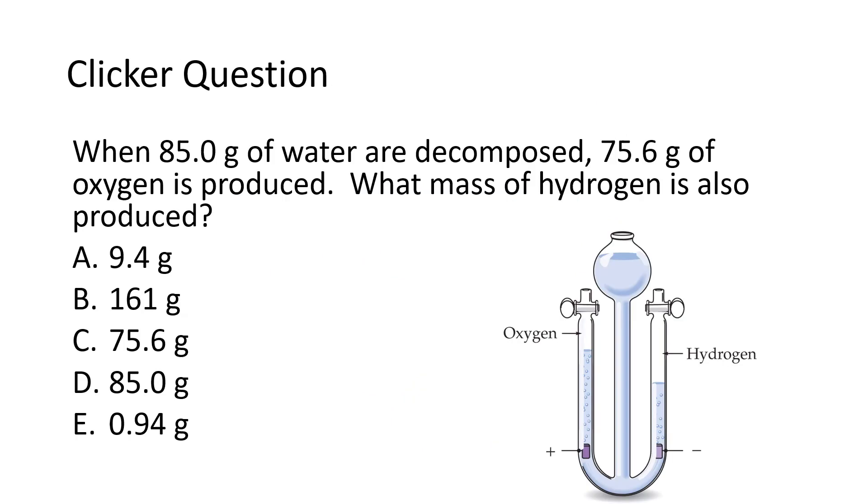This question tells us that 85 grams of water are decomposed, and that produces 75.6 grams of oxygen, and it wants to know what mass of hydrogen is also produced. So this is an example of a decomposition reaction. Water is broken down to give us the elements hydrogen and oxygen. Well, based on the law of conservation of mass, the total mass that we started with has to equal the total mass that we end up with. We are starting with 85 grams of water.